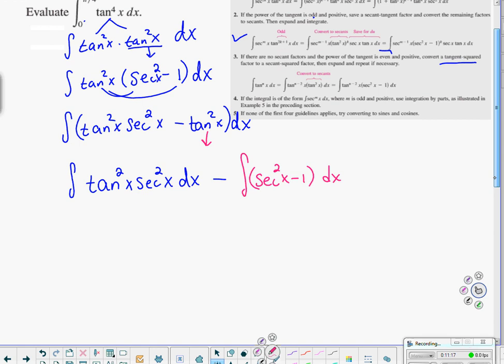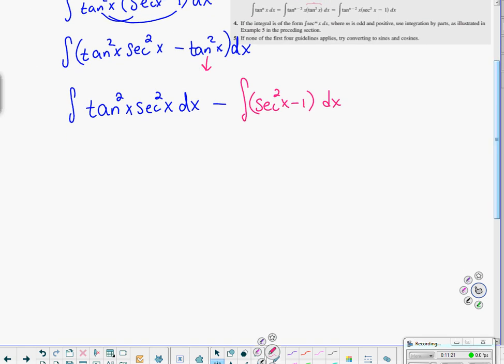We got tangent squared x secant squared x dx. I'm going to make that one separate integral, minus. Now, this next integral, tangent squared, that's the same thing as secant squared x minus 1 dx. And the integral of secant squared, that's doable. The integral of secant squared is tangent. I think we're all set.